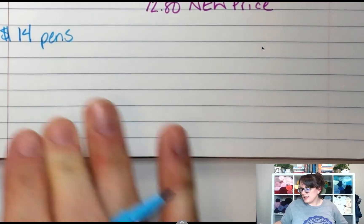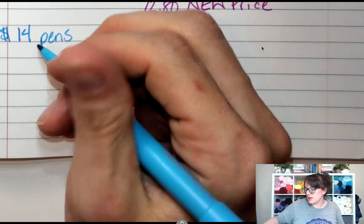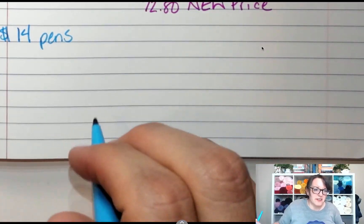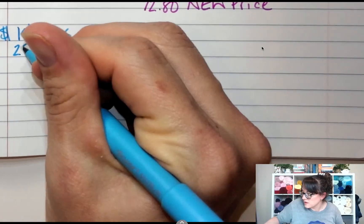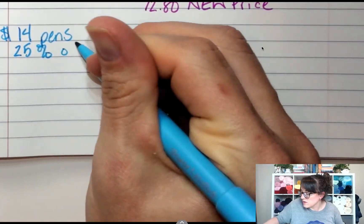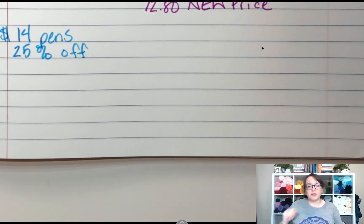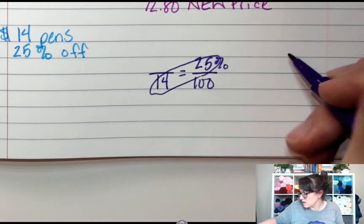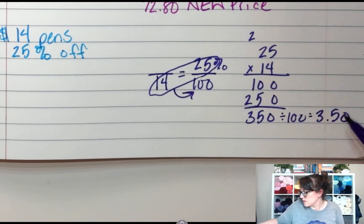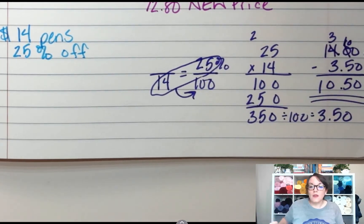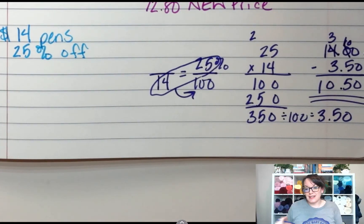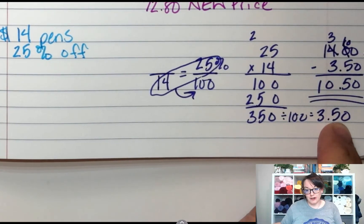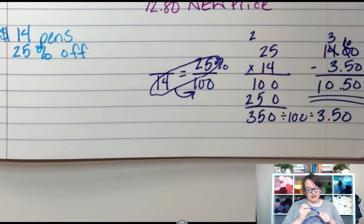And I got a, oh let's make it harder than that, 25% off. It's a 25% off coupon. What is my final price going to be? So my final price after I took $3.50 off is $10.50.